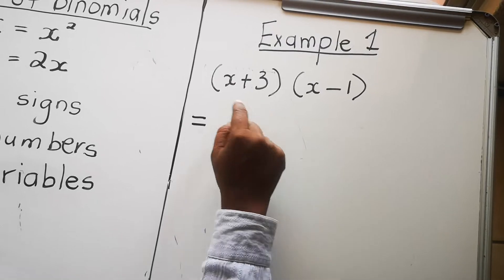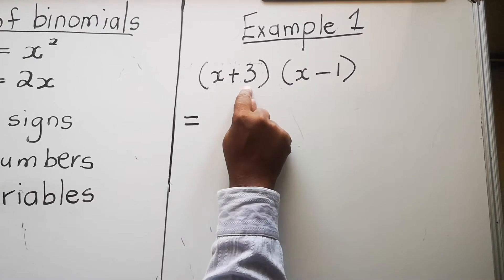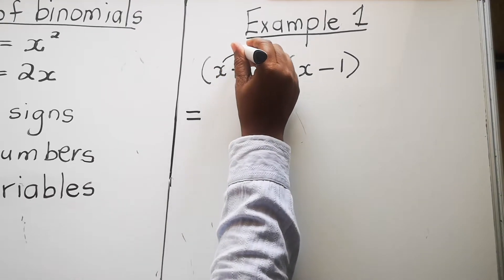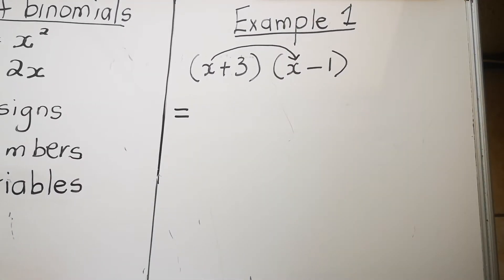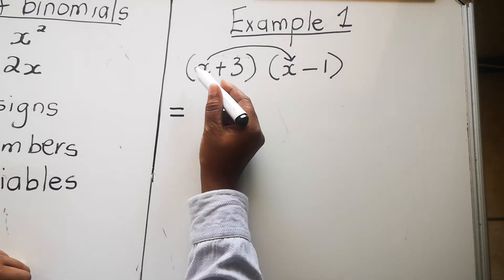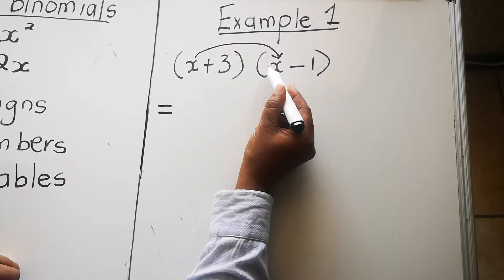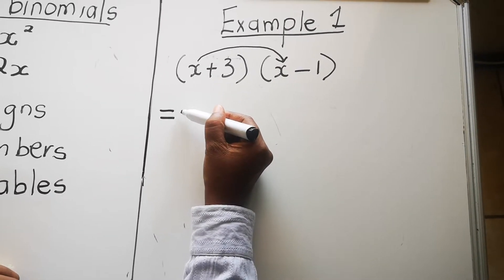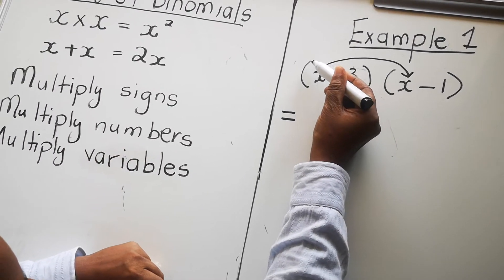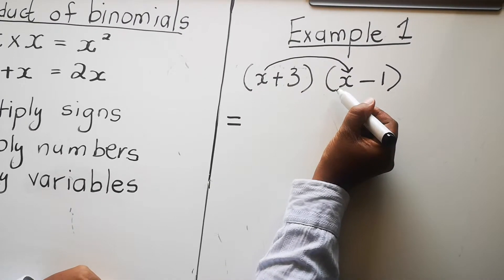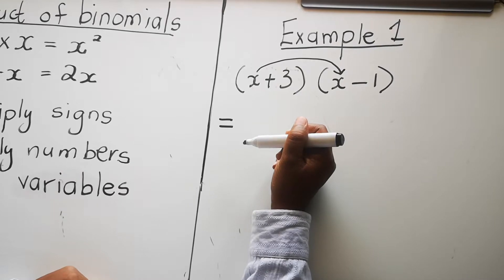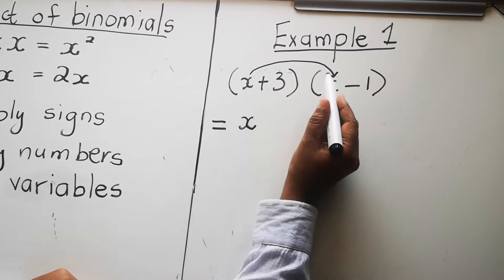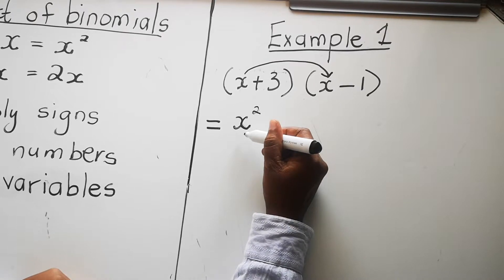In example one you have x multiplied by x plus three, multiplied by x minus three. You start with the first term — multiply the first term in the first binomial with the first term in the second binomial. Follow the rules: step one, multiply the sign — there's no sign, so it's positive times positive, which is positive. Step two, multiply the numbers — there's a one there, so one times one is one; we don't write the one. Step three, multiply the variables — x times x, same base, one plus one, gives us x squared.